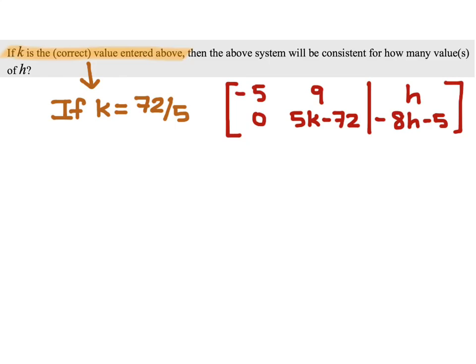So, let's look at our augmented matrix. If k equals 72 over 5, then 5k minus 72 will equal 0.